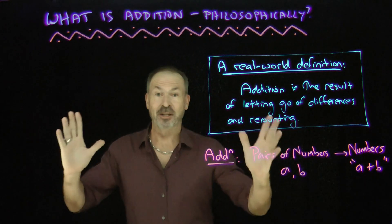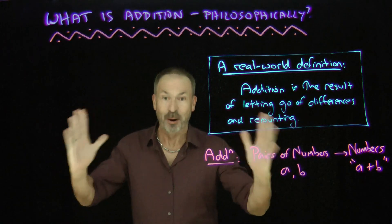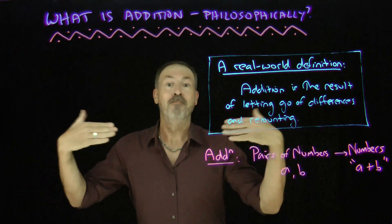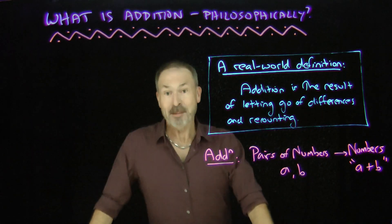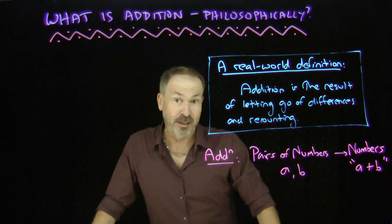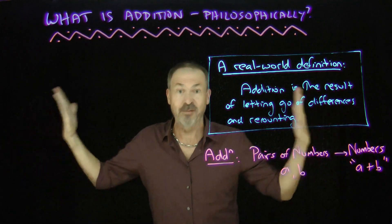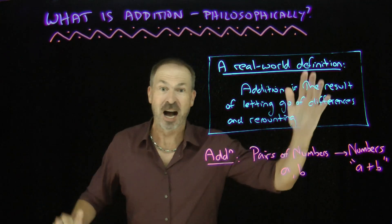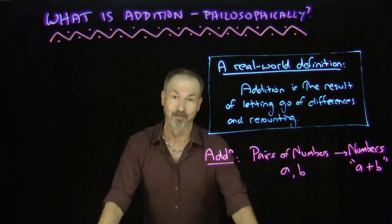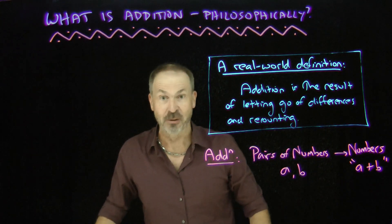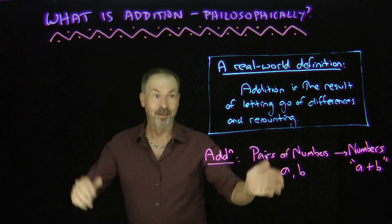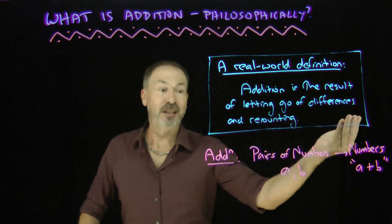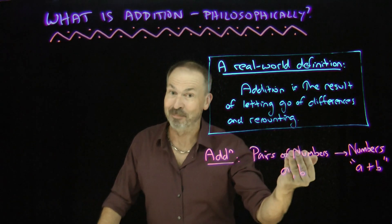To get us going we need a first real-world context — a real-world definition of addition to move us forward. Mathematically, what do we know? Well, mathematics started by counting things. We like to count all sorts of things and we have numbers to count things with. One, two, three, four, five, and so on are the counting numbers. And here's a real-world definition of addition based on that idea: addition is the result of letting go of differences and then recounting.